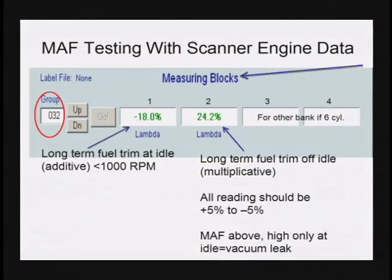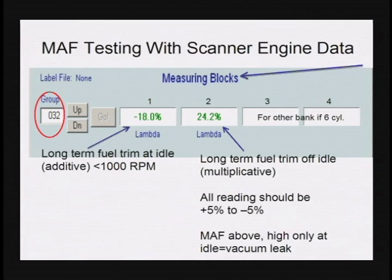All readings should be plus or minus five percent. When we looked at measuring block number one at minus 18, that was way out of range. Measuring block number two is at 24.2, meaning the computer is adding fuel — so we're adding fuel at higher rpm and taking away at lower rpm. Almost always when we get these readings, it's an indication of a bad mass airflow. If I have high additive numbers only at lower rpm, that is usually always an indication of a vacuum leak.